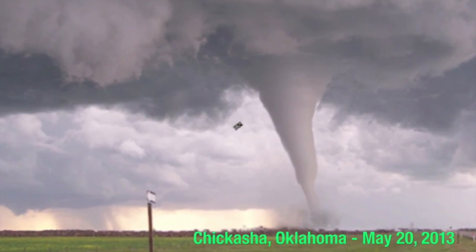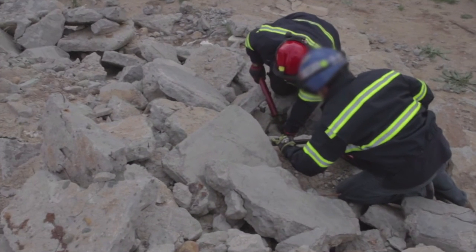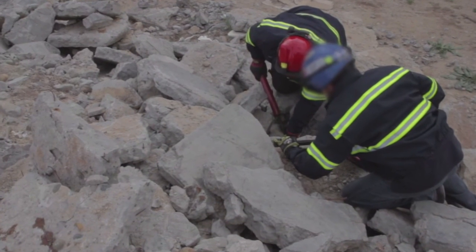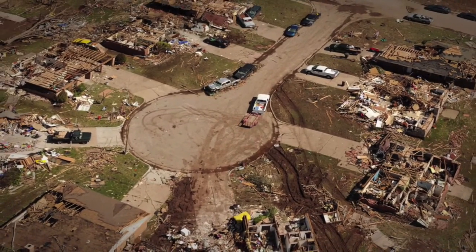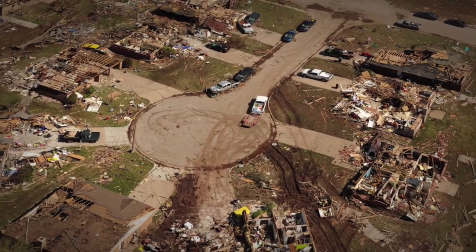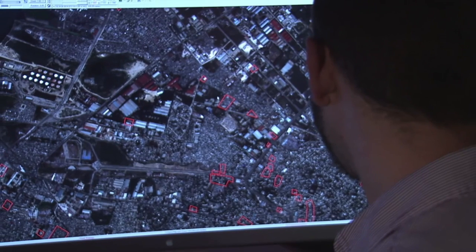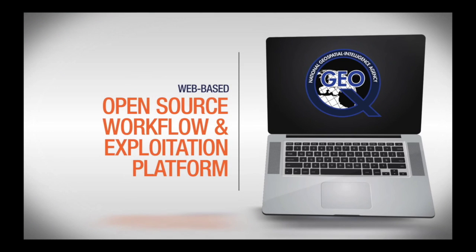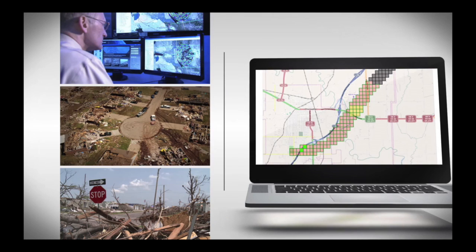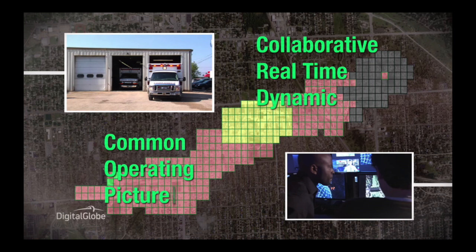Disasters can happen at any time. When a disaster hits, every second counts, so timely and accurate information is essential. GeoQ, NGA's web-based open-source workflow and exploitation platform, organizes geospatial data from multiple sources and provides life-saving information to those who need it most.